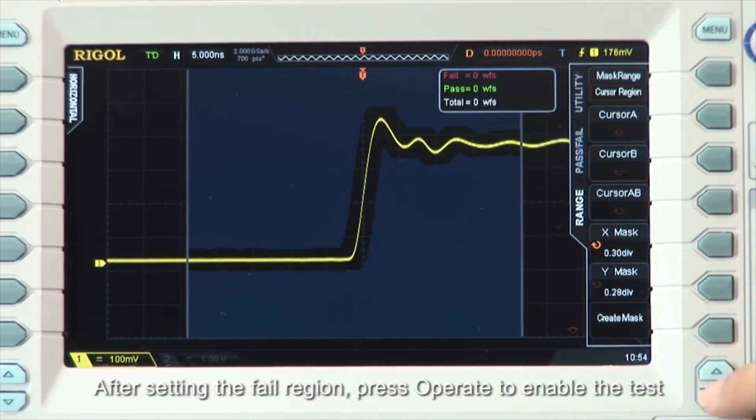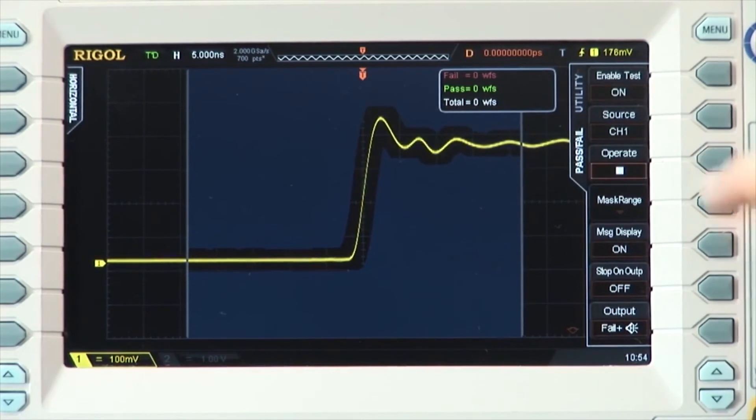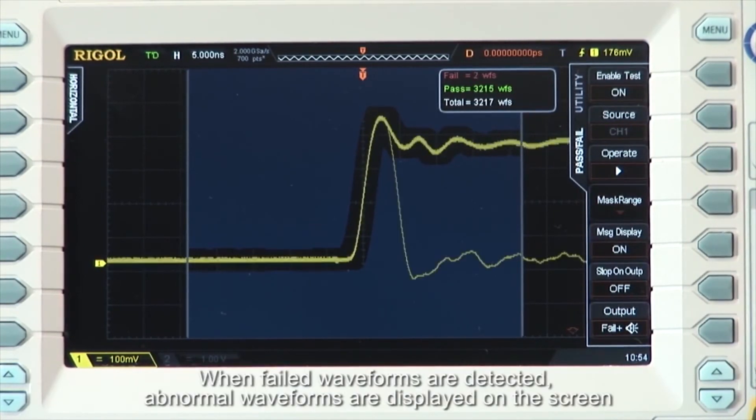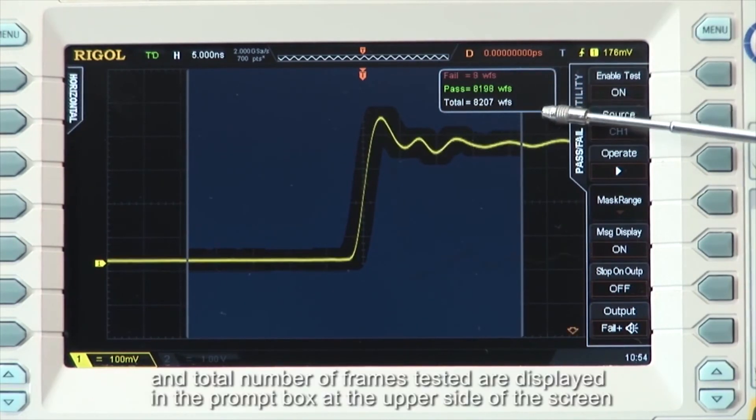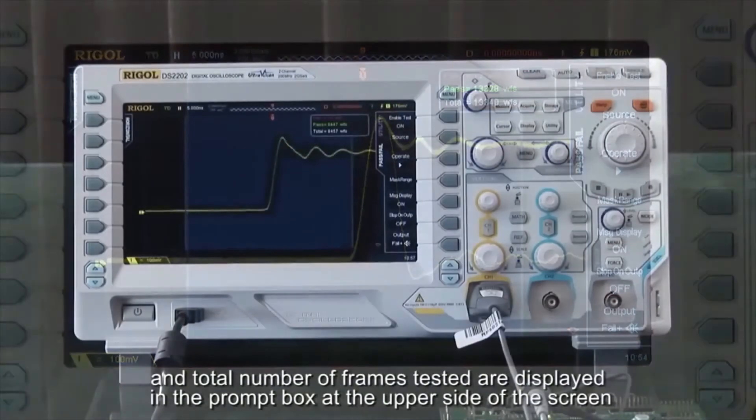After setting the fail region, press Operate to enable the test. When failed waveforms are detected, abnormal waveforms are displayed on the screen, and the current number of failed frames, number of past frames, and total number of frames tested are displayed in the prompt box at the upper right side of the screen.